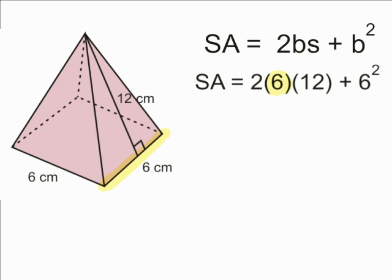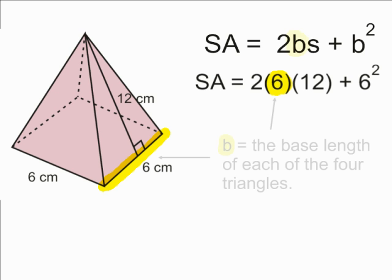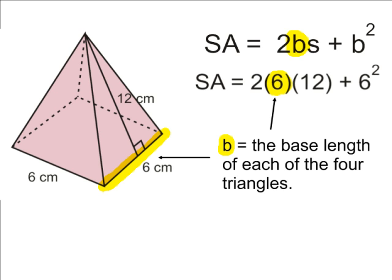The letter b in this equation represents the length of the triangle's base. In this example, the length of each triangle's base is 6 centimeters, so simply substitute the variable b with a value of 6.